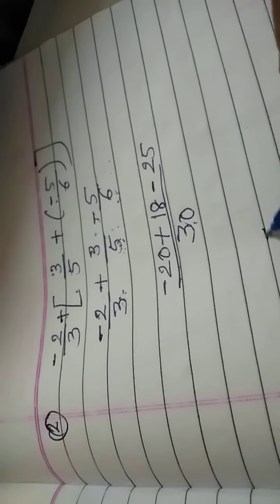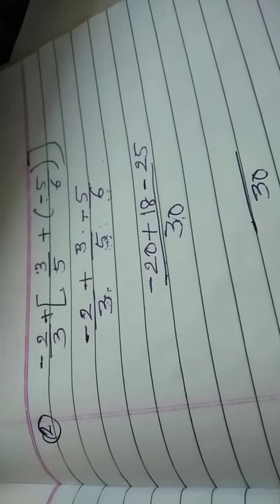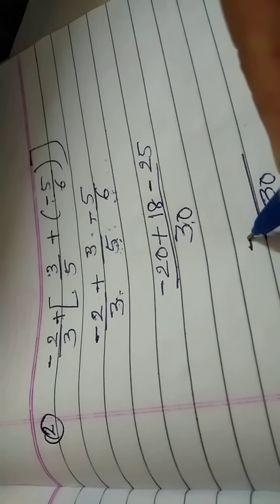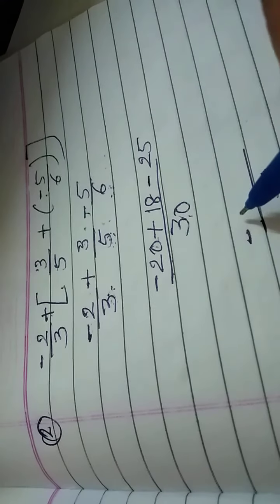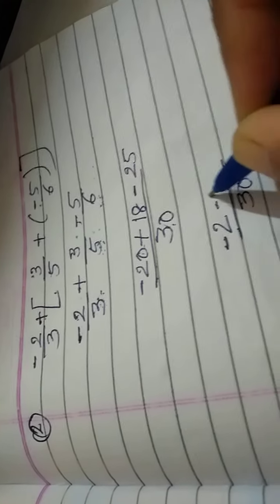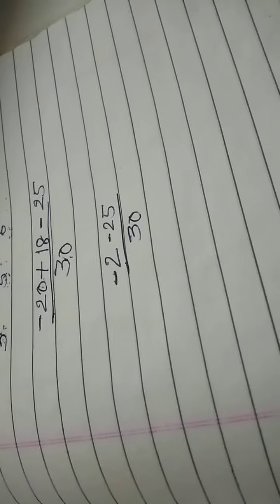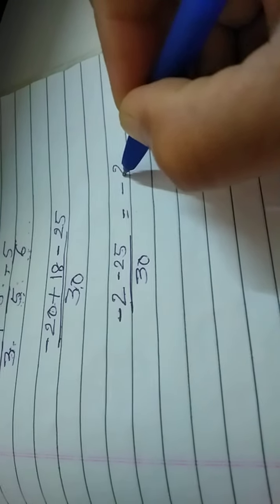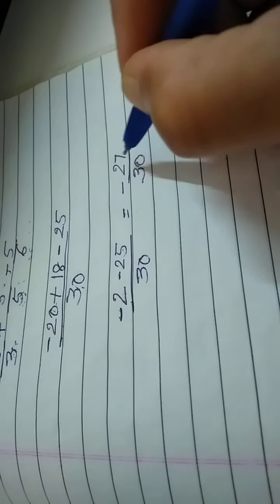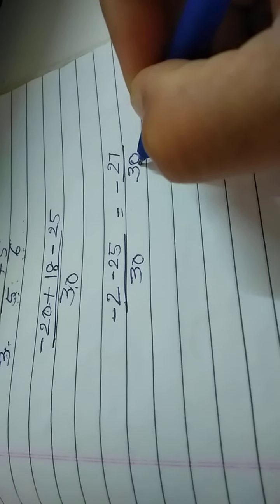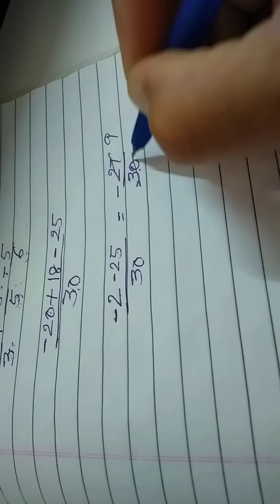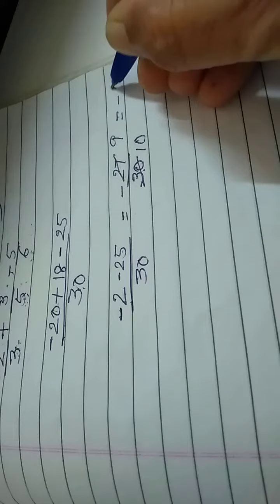Now we solve: denominator is 30, and we have minus 20 plus 18 minus 25. For minus 20 plus 18: the sign comes of the bigger number which is 20, so we get minus 2. Then minus 2 minus 25 gives minus 27 upon 30. Now we check for common factors of 27 and 30 — yes, 3 is common. Cancelling: 3 nines are 27 and 3 tens are 30. So the answer is minus 9 upon 10.